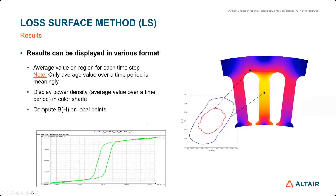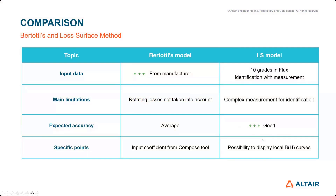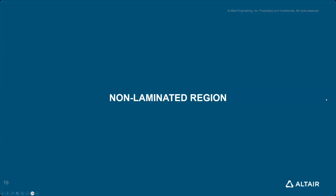With the LS method, we can expect the same results as Bertotti, but also one more capability: displaying the BH curve on one point of the device. Comparing the two methods quickly: Bertotti's model is the one most people use because it's the easiest. You can simply take the manufacturer's data, put it in the fitting tool, and get your model in Flux — although it's not the most accurate. The LS model, specific to Flux, has much better accuracy because it considers the dB/dt aspect, but requires more model identification.